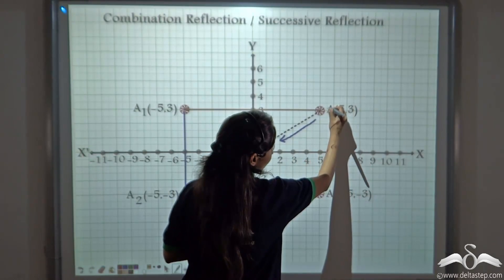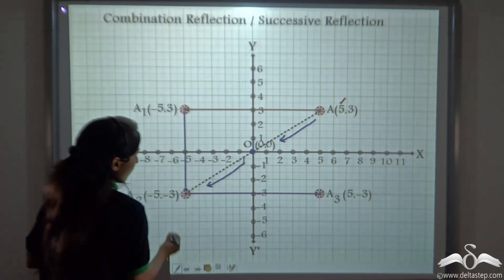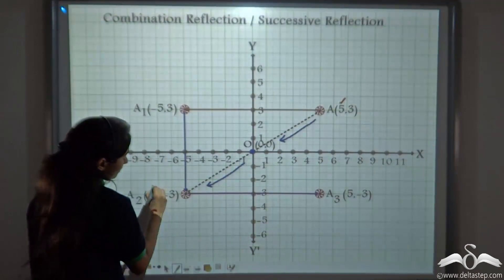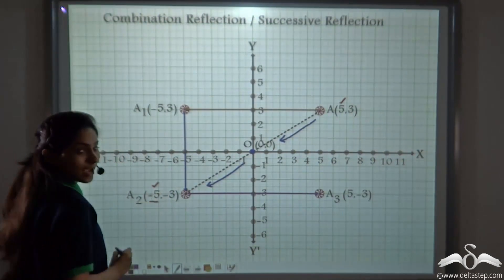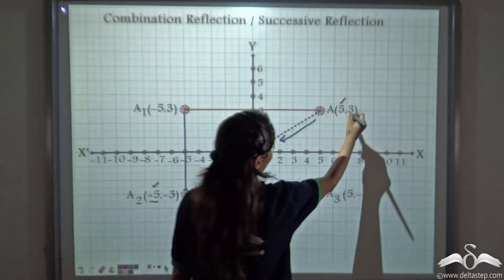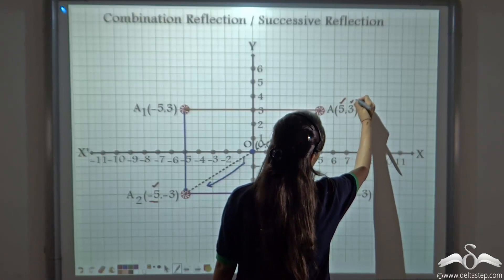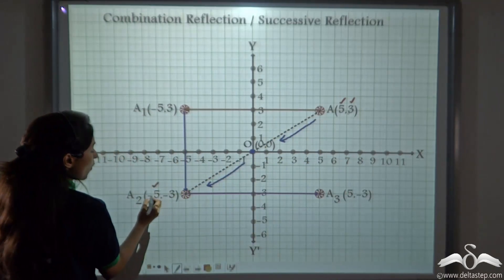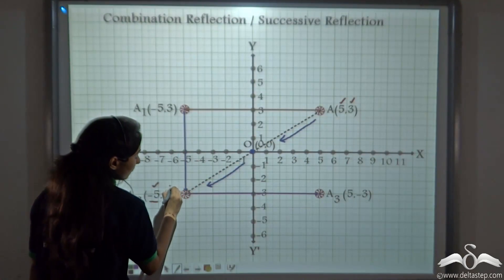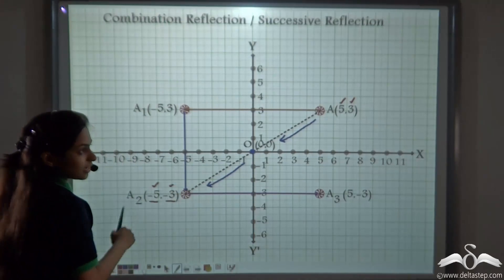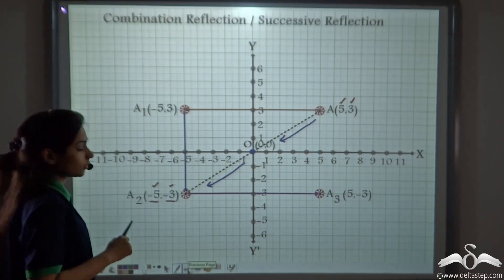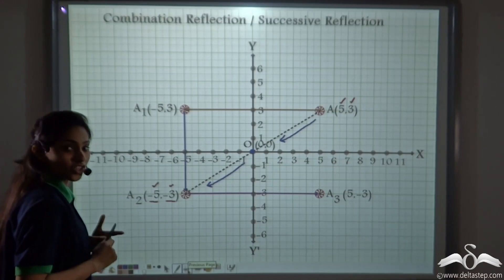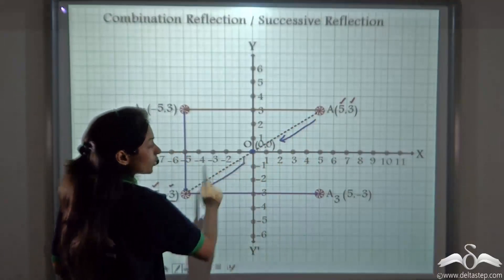In object A, the x coordinate is 5, whereas in image A2 the x coordinate is minus 5 — the sign has changed. The y coordinate in the object is 3, whereas in image A2 the y coordinate is minus 3. Both signs have changed. So what did you learn? Both the sign of the x coordinate and y coordinate will change when we reflect a point about the origin.